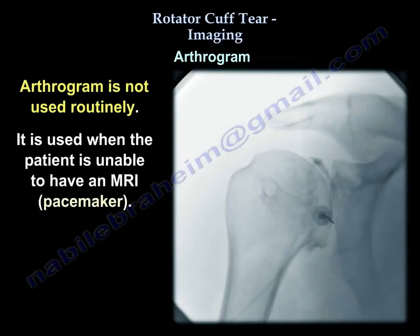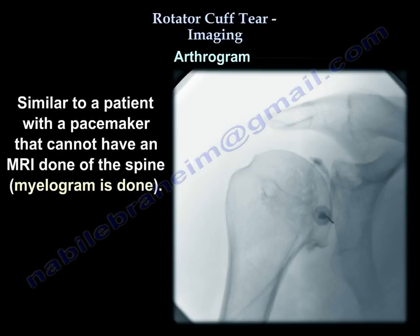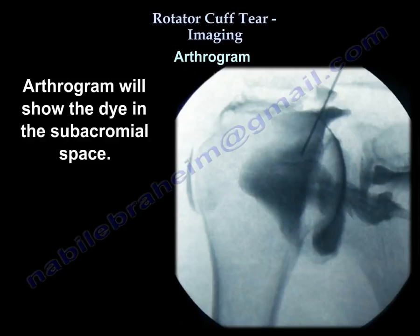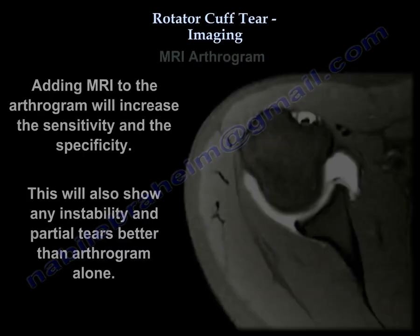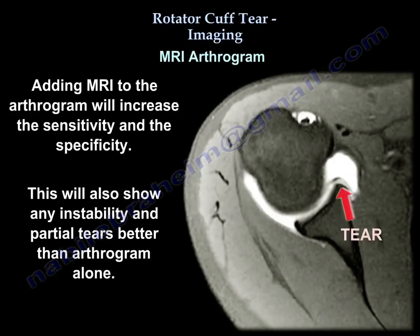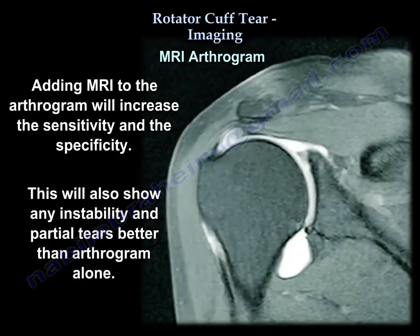Arthrogram is not used routinely, but it is used when an MRI cannot be performed — for example, if the patient has a pacemaker. Arthrogram will show extravasation of the dye into the subacromial space. The geyser sign means the dye leaks into the subacromial space and the AC joint, indicating a massive tear. Adding MRI to the arthrogram increases sensitivity and specificity, shows instability, and may better demonstrate partial tears.